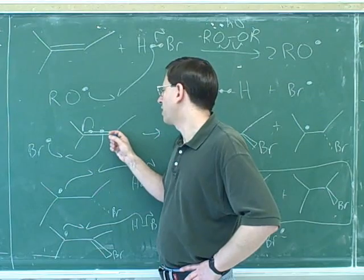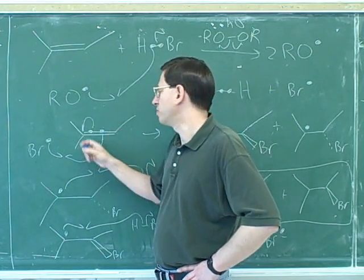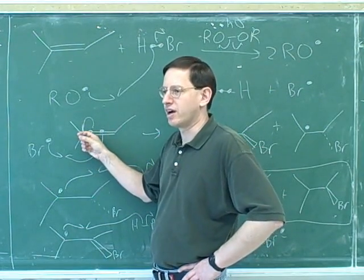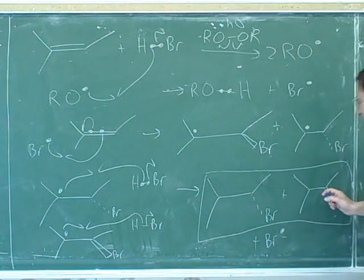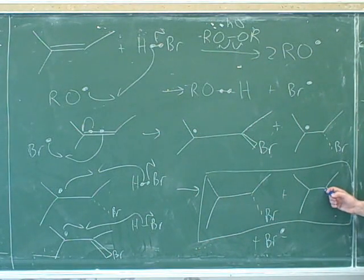Well, if the bromine ends up here, we would call that anti-Markovnikov. And if the bromine ends up here, we would call that Markovnikov. Well, in this reaction, the bromine ended up on the right, on the less-substituted carbon. So it was anti-Markovnikov.